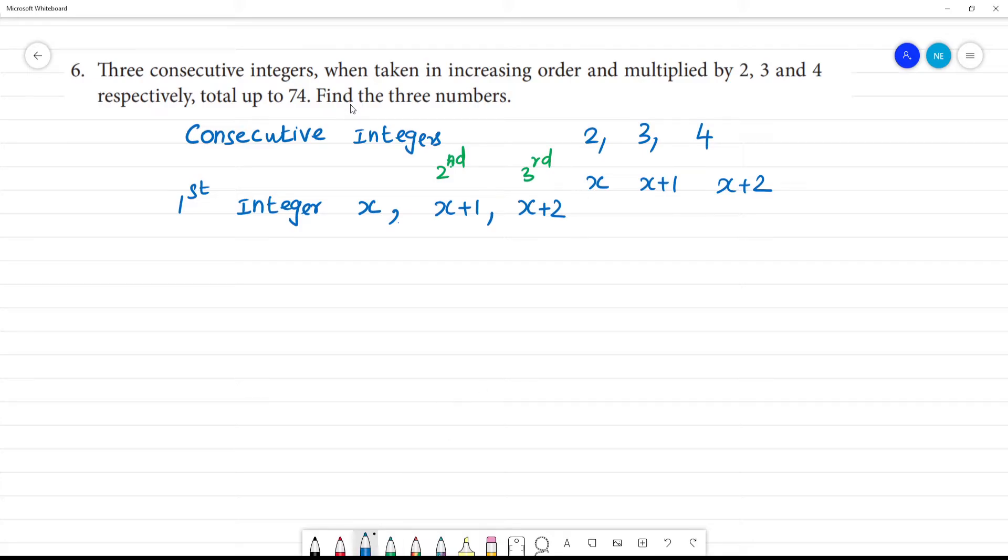Now, according to the statement, when taken in increasing order, that means one after another. The first integer is multiplied by 2, the second integer is multiplied by 3, so 3 into x plus 1, and the third integer is multiplied by 4, so 4 into x plus 2. When we sum all these, we get 74.